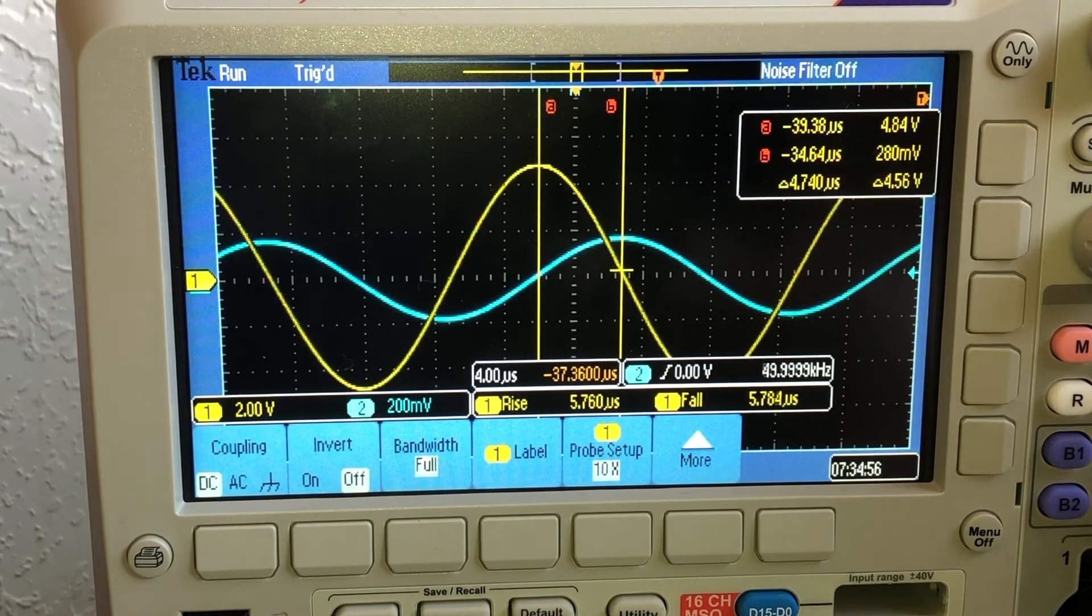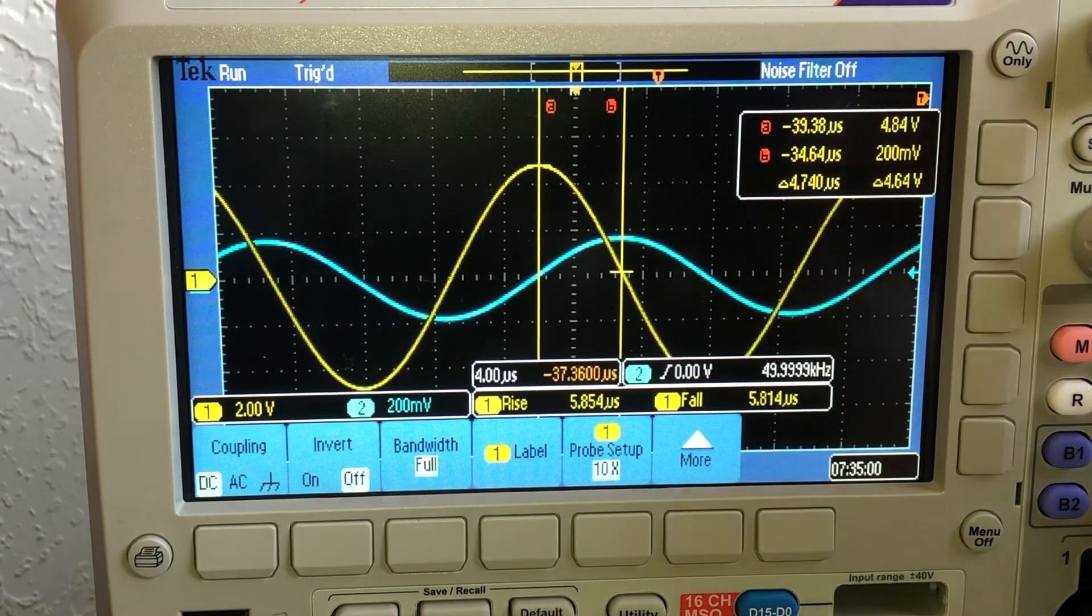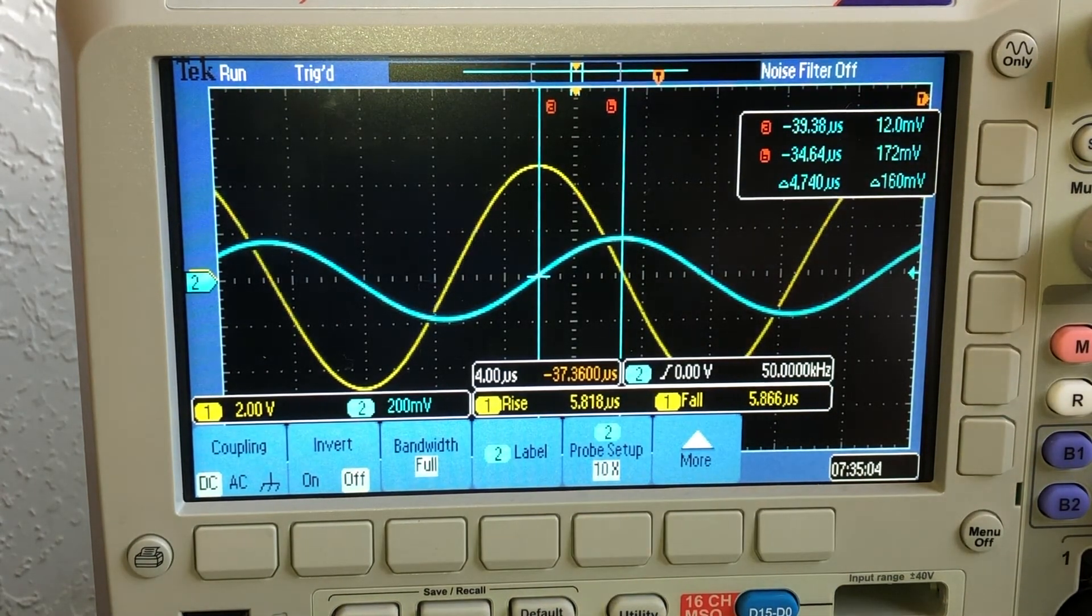At 50 kHz, I'm seeing 4.84 volts, and then across the resistor I'm seeing 172 millivolts.